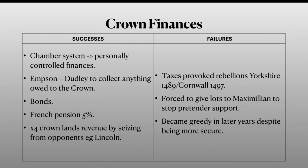He used bonds on nobles and pretty much anybody — bonds are basically promises for good behaviour, or you'd pay money. This was another way of exploiting people for money for the crown. He got the French pension from the Treaty of Étaples, which made up five percent of the royal income. Finally, revenue from lands owned by the crown quadrupled during his reign because he seized land from opponents such as the Earl of Lincoln, who was killed at the Battle of Stoke in 1487. Basically, he took control of land and people's lives, putting everybody in debt to him so that he could increase his revenue.